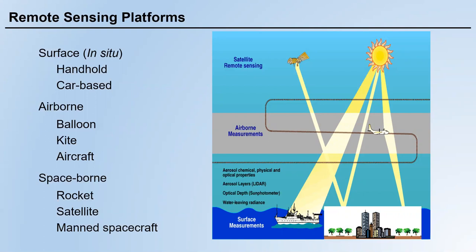And the third type is called spaceborne. We use rockets to deliver satellites. Satellites are orbiting the Earth, and sensors can be mounted on satellites or manned spacecraft.